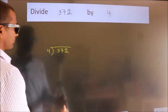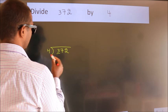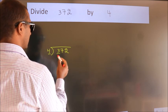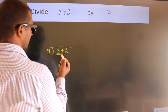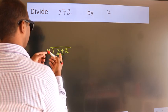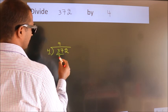Next, here we have 3, here 4. 3 is smaller than 4, so we should take 2 numbers: 37. A number close to 37 in the 4 table is 4 nines, which equals 36.